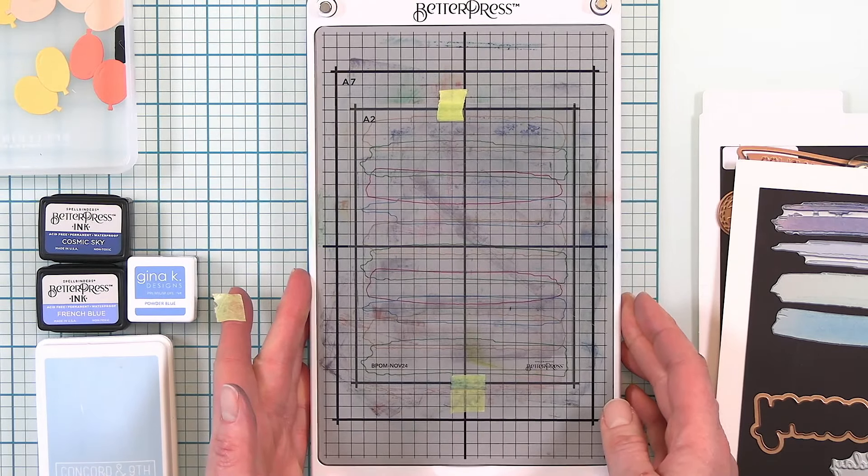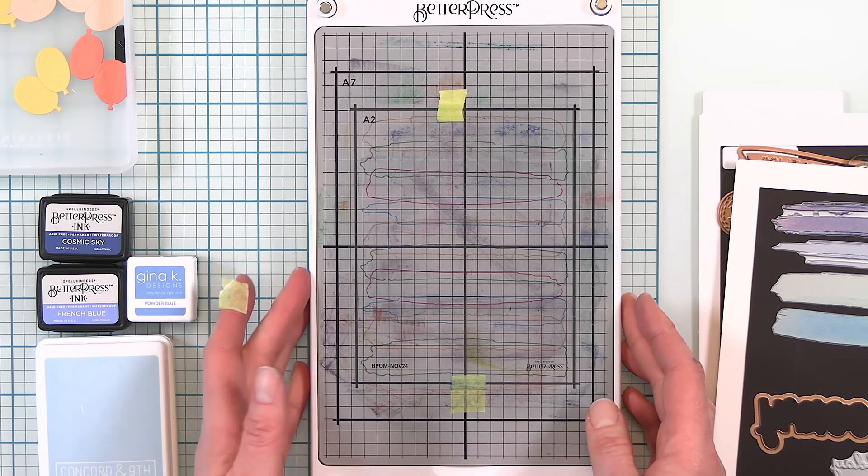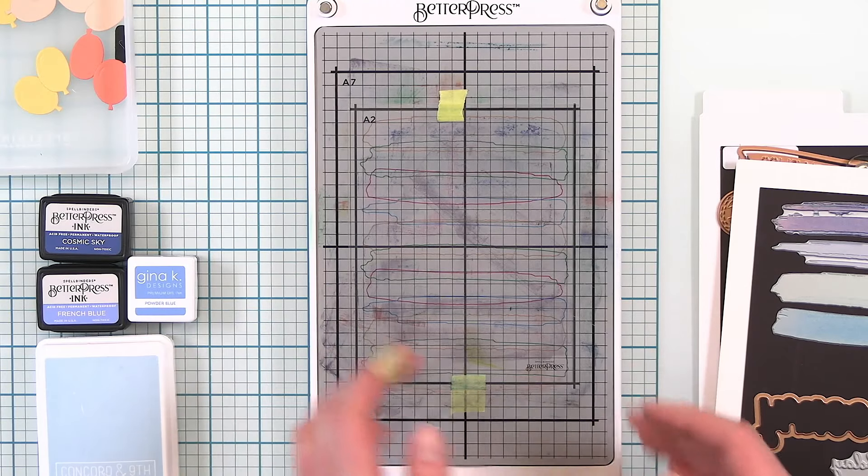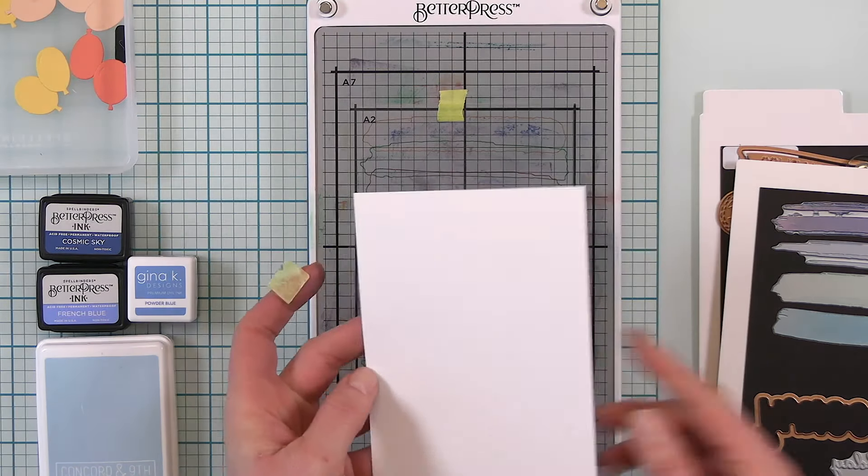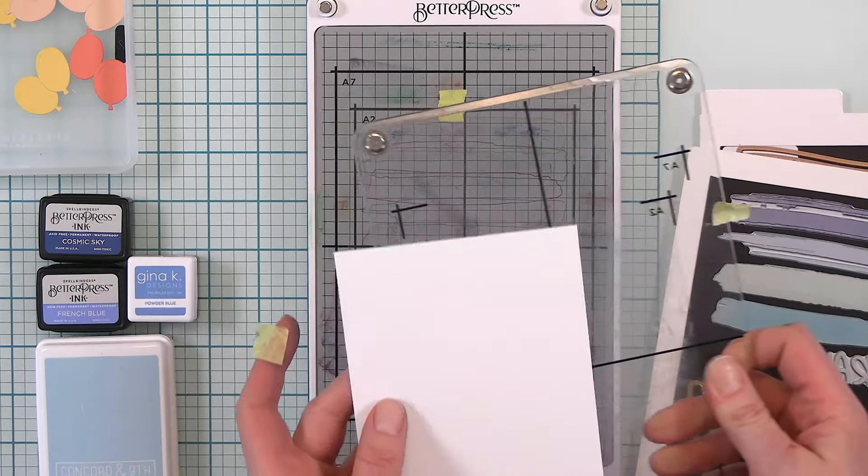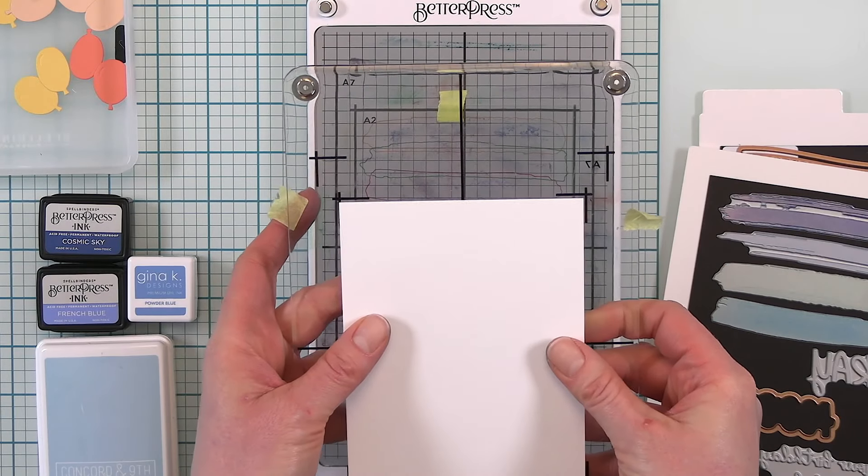So I have my Better Press system there, I have my template already on my platen and I am going to start creating this background. Now I'm using a piece of Better Press card.